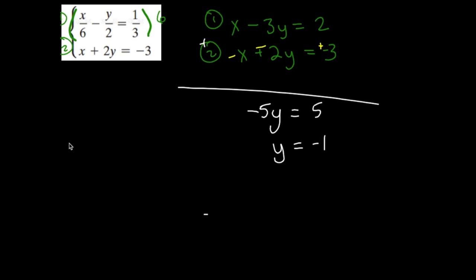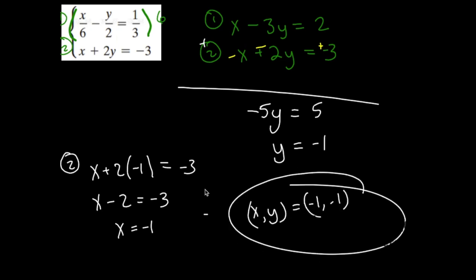Once I know y, x is easy to find. I'll use equation 2 to find it. x plus 2 times y, which is negative 1, is equal to negative 3. x minus 2 is negative 3. Add 2 to both sides. x is negative 1. So my single solution in this case is negative 1, negative 1. One solution, consistent, independent system.